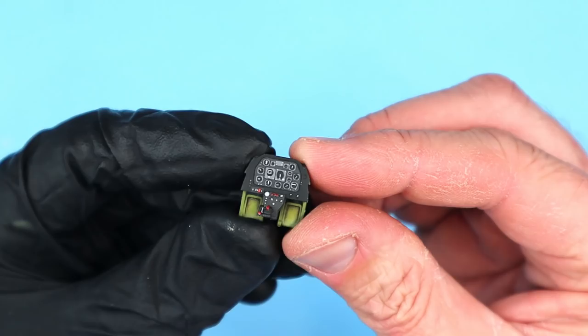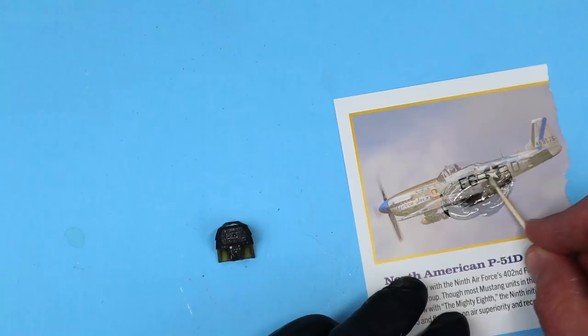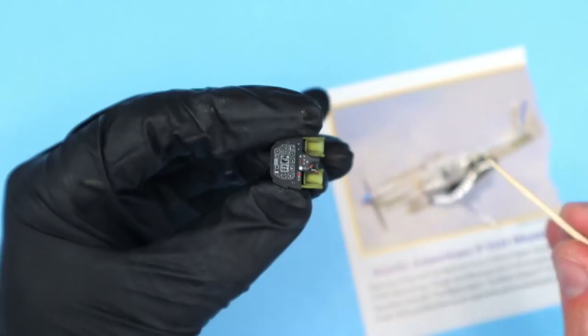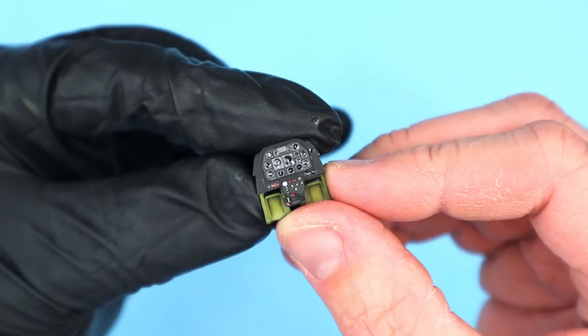The kit includes a nice decal for the instrument panel but I chose to hand paint the details. To represent the instrument bezels I mixed up a little five minute epoxy and using a toothpick added a drop of it to each individual gauge. You can see that the epoxy adds just a little extra realism by simulating a nice shiny glass bezel.